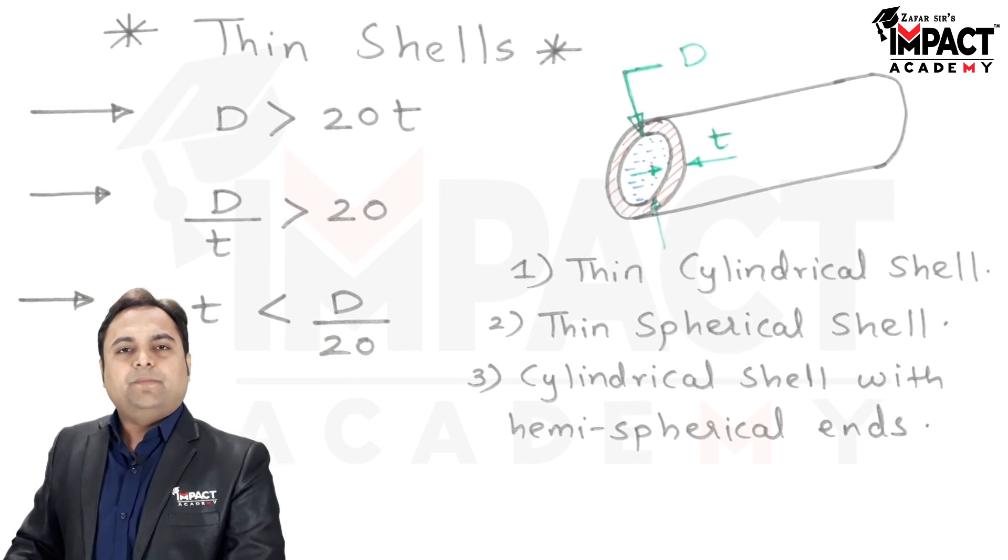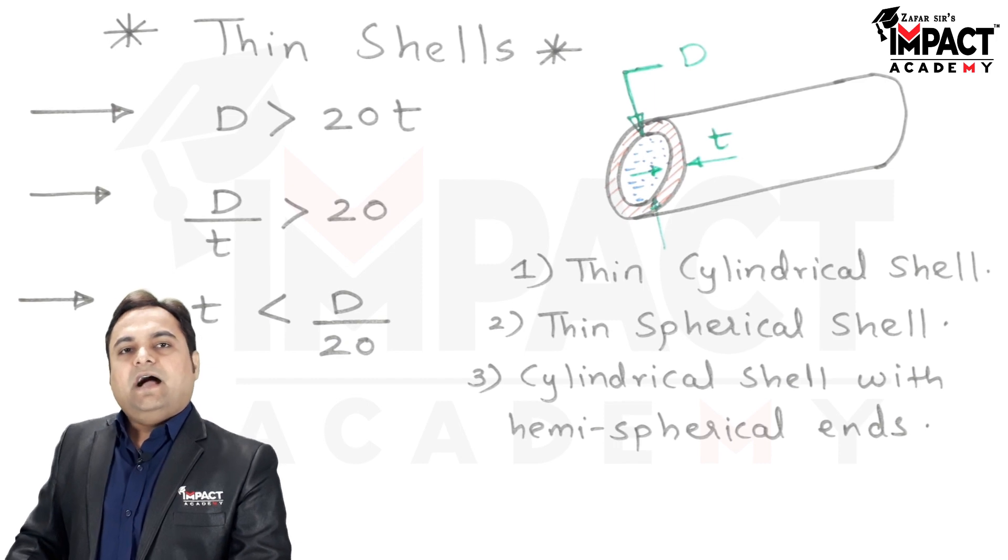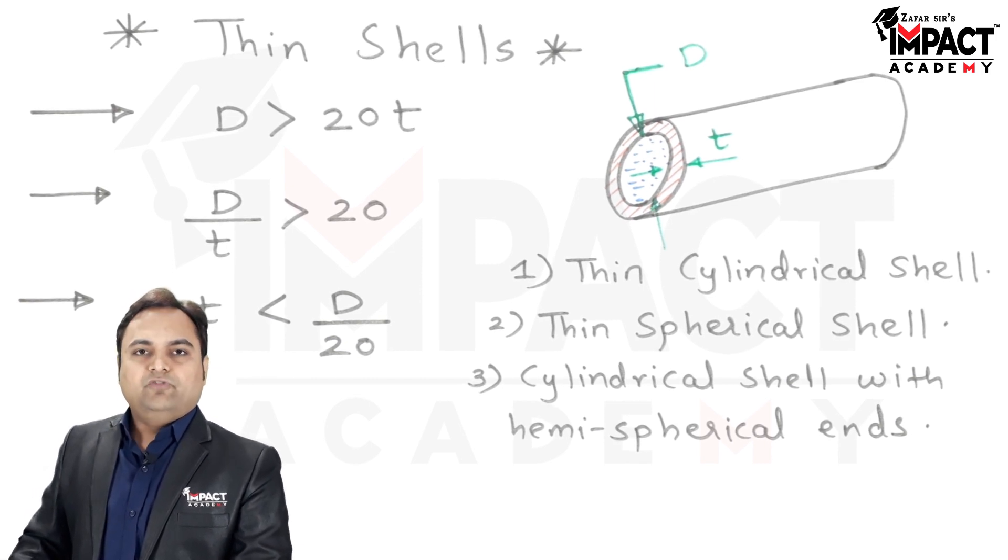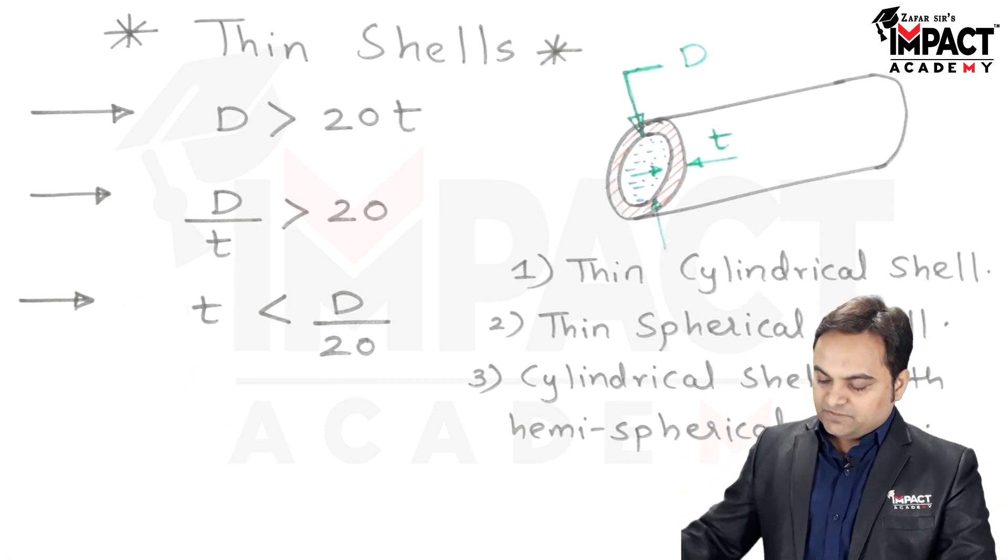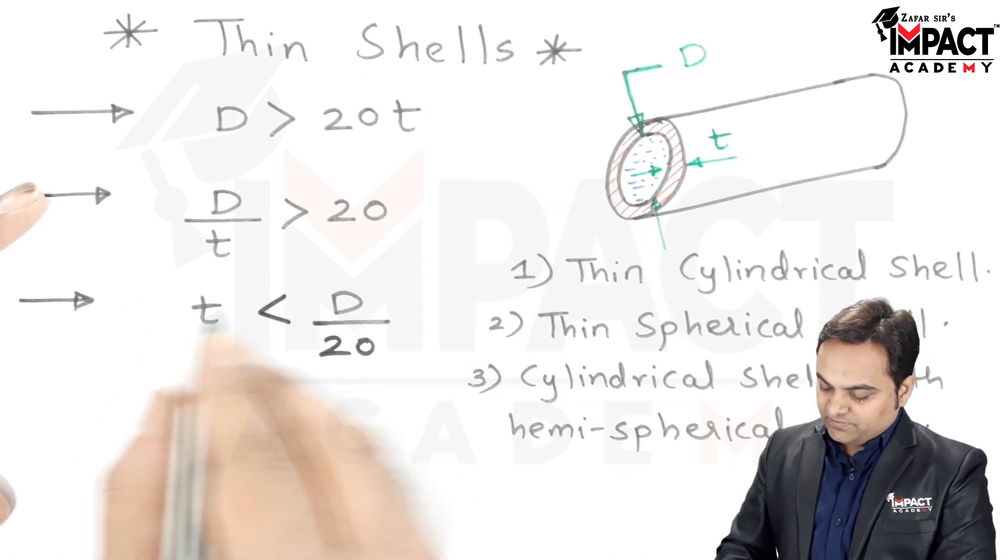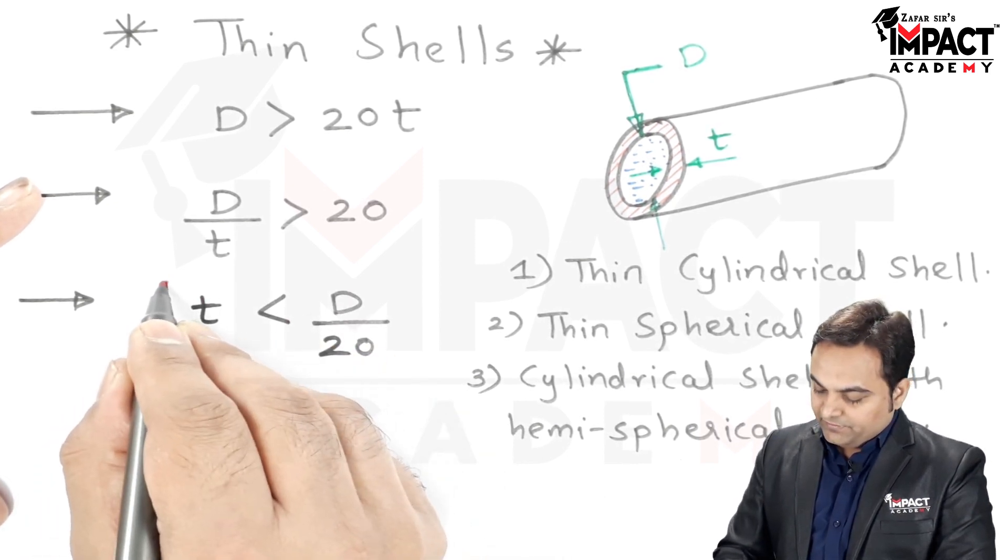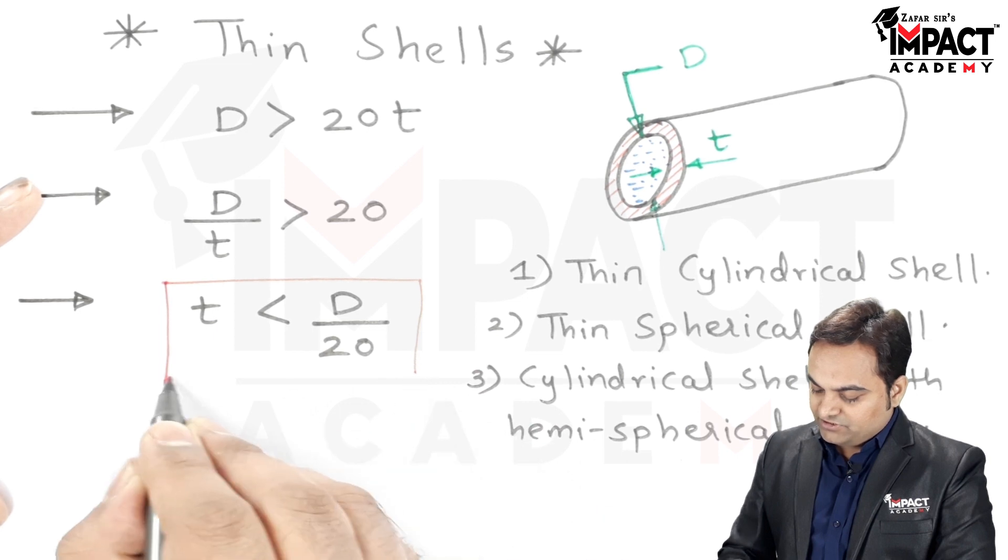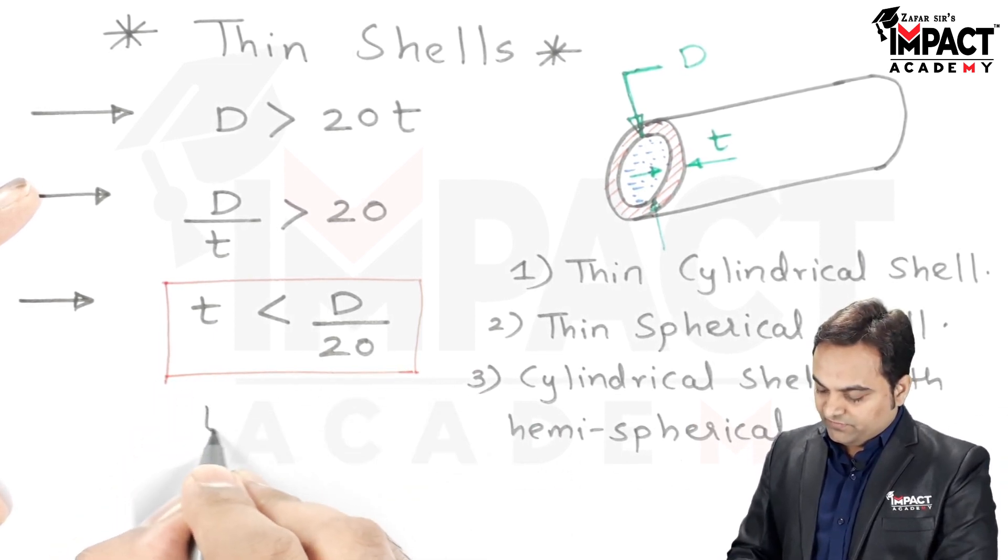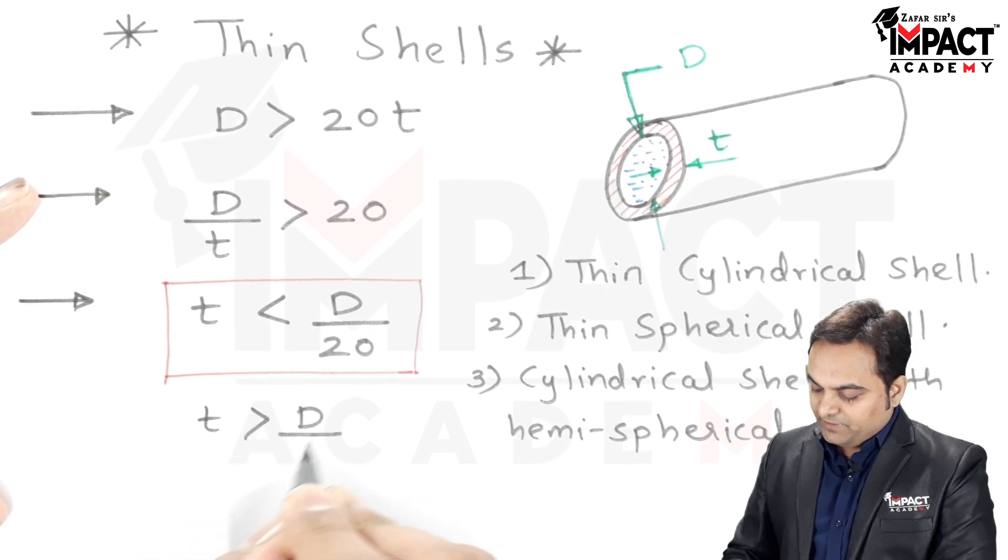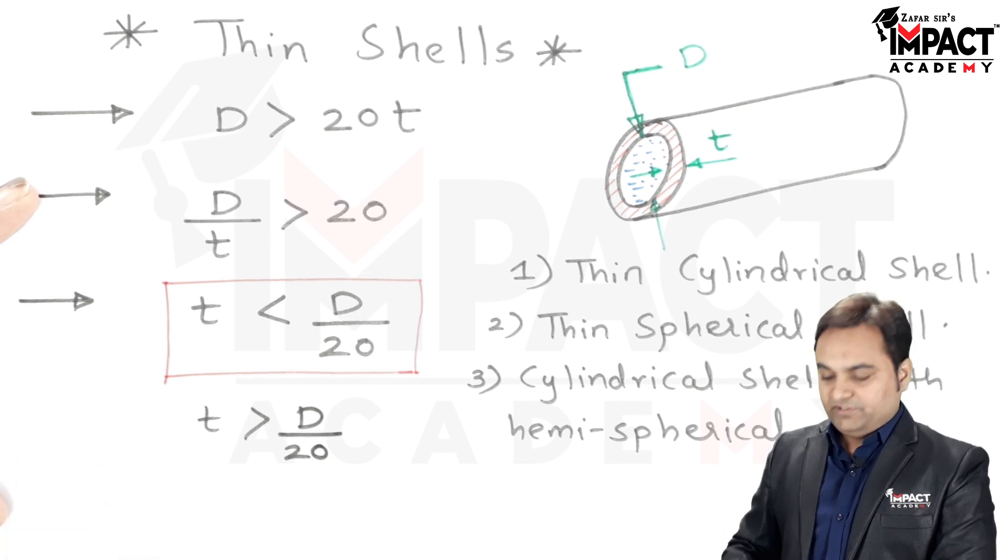Similarly, pressure cooker is an example of thin cylindrical shell wherein we are using high pressurized gas or fluid that is stored inside that thin cylinder. As per the defining condition I explained, if the thickness is less than diameter by 20, then that is called a thin shell, whereas if the thickness is greater than D by 20, then such shells are called thick cylindrical shells.